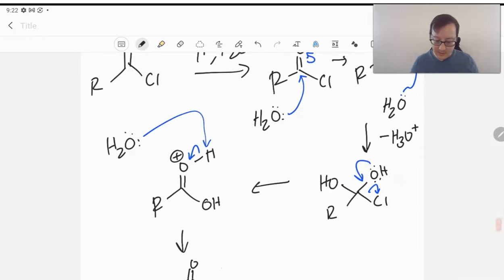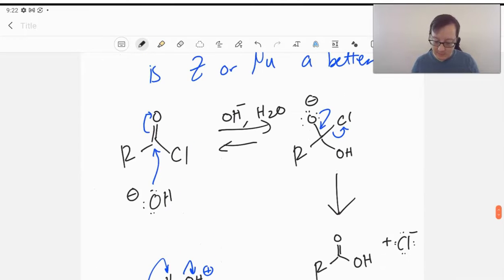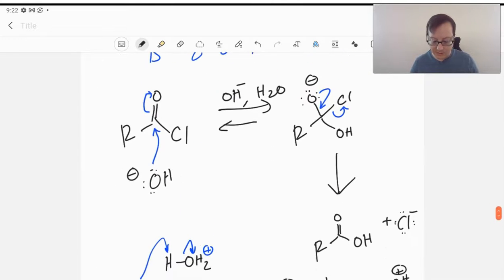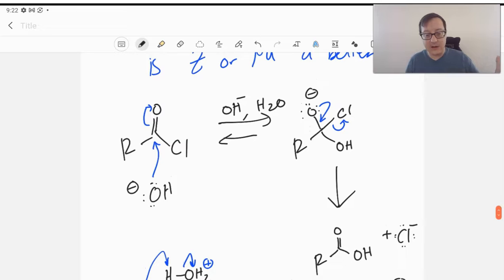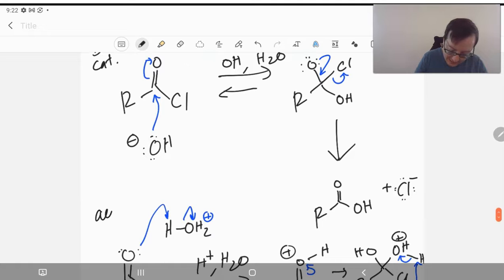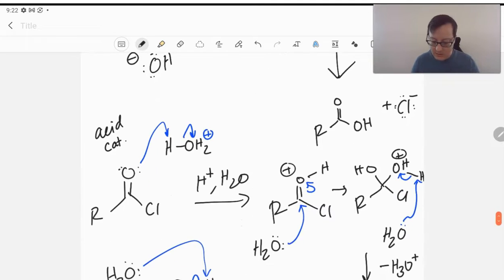Pretty standard. Let's take a look. Let's compare these two. The base-catalyzed one is super easy. Hydroxide attacks, forms that alkoxide, comes down, kicks out our leaving group, and we're done. Easy. This is the base-catalyzed. The acid-catalyzed is a little bit more involved, we can say.